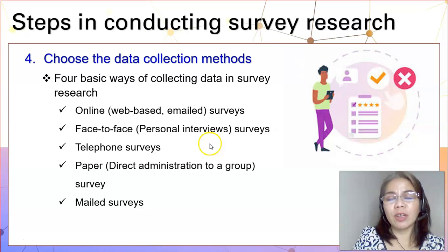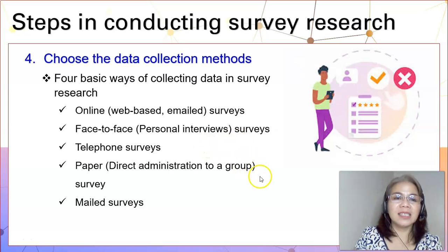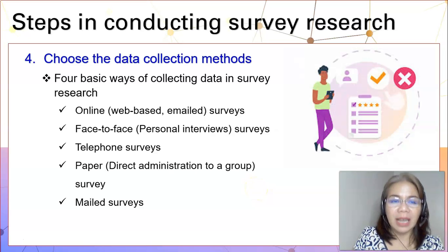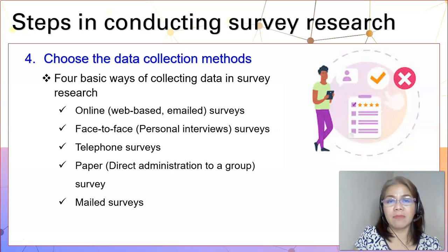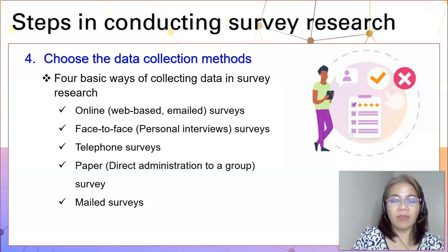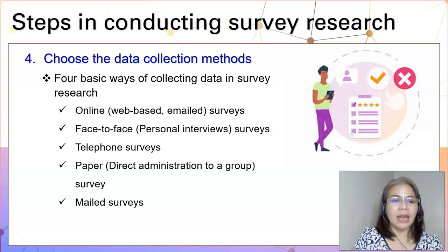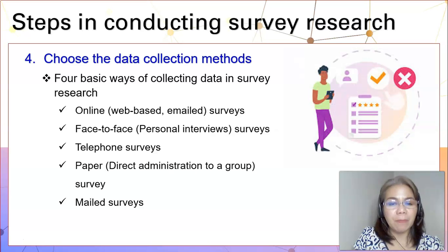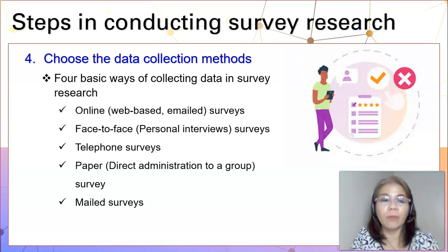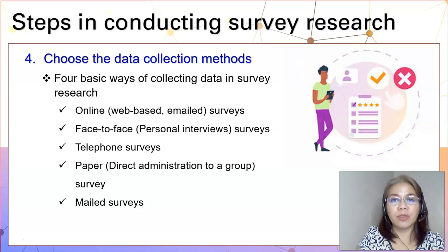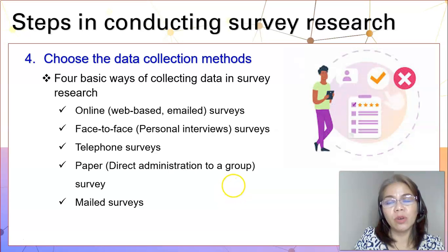After you have identified your population and your sample, the next step is to choose the data collection methods. There are basic ways of collecting data in survey research. One can be online surveys — it can be web-based or done through emails. Another is face-to-face surveys such as personal interviews or focus group discussions. Another is telephone surveys. Or you can administer a paper survey directly to a group of people, or you can mail the surveys through posts.